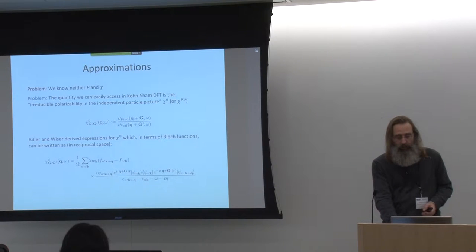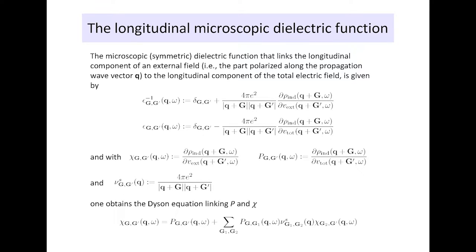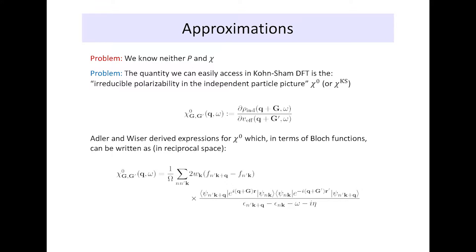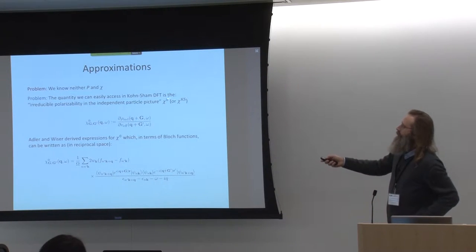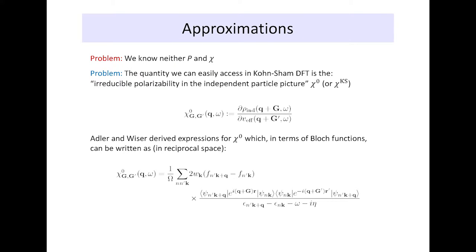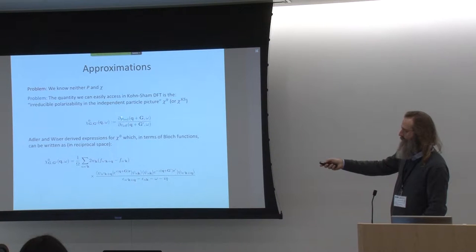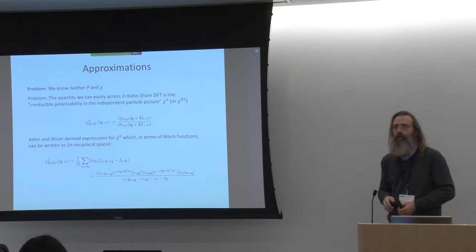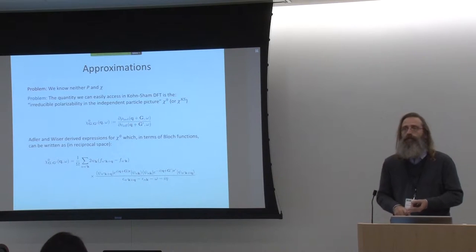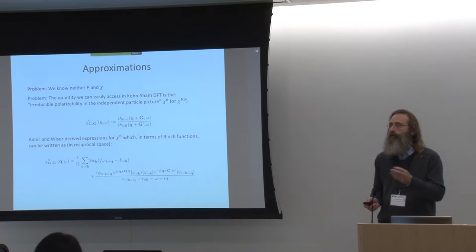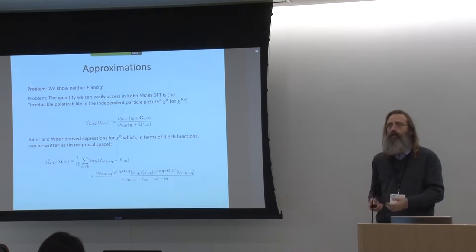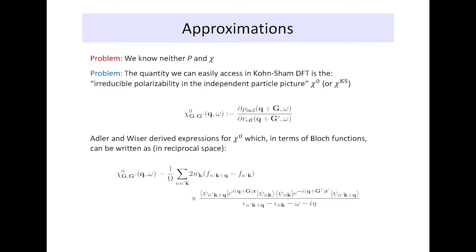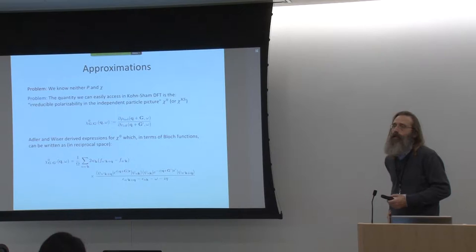How do we compute P and χ? We can't get these quantities directly from our computations. The only quantity we can easily access in Kohn-Sham density functional theory is what is called the irreducible polarizability in the independent particle picture, commonly labeled χ₀ or χ_Kohn-Sham. χ₀ is the change in the induced charge density due to a change in the effective potential — not the total potential or external potential, but the effective potential, which is the local potential in the Kohn-Sham Hamiltonian. This is a quantity we can vary and observe the change in density.